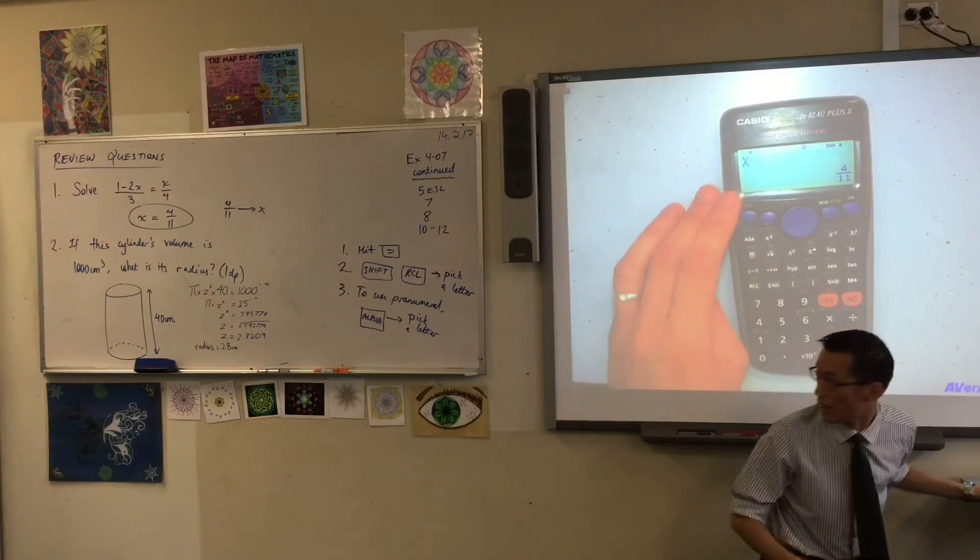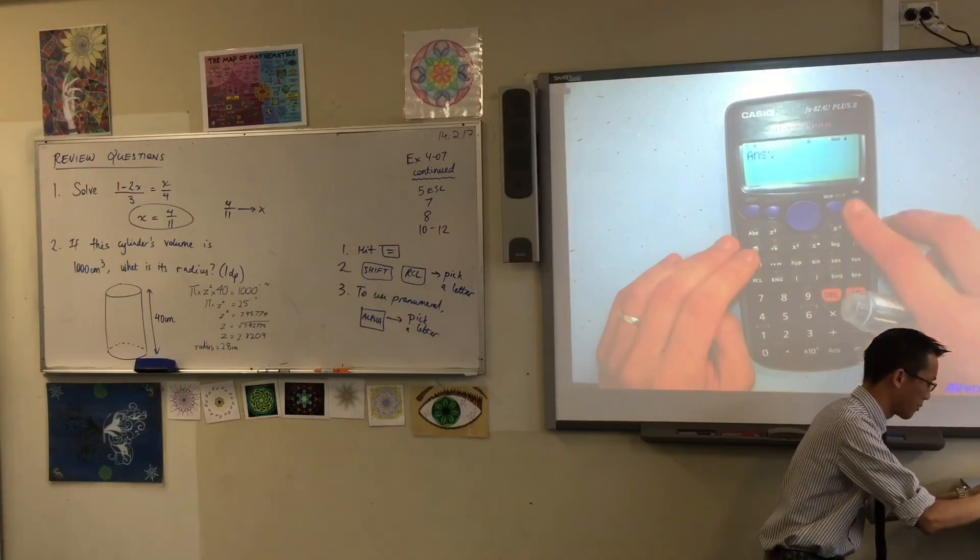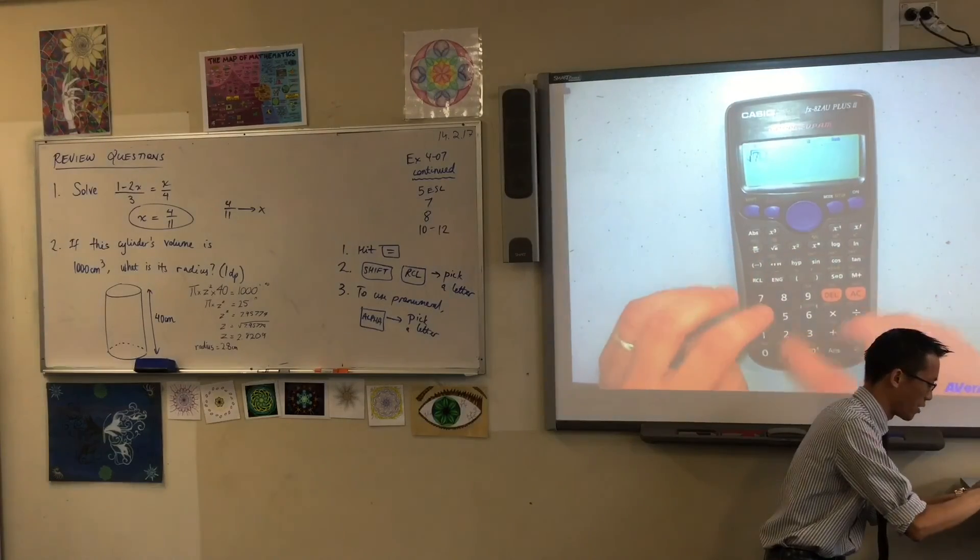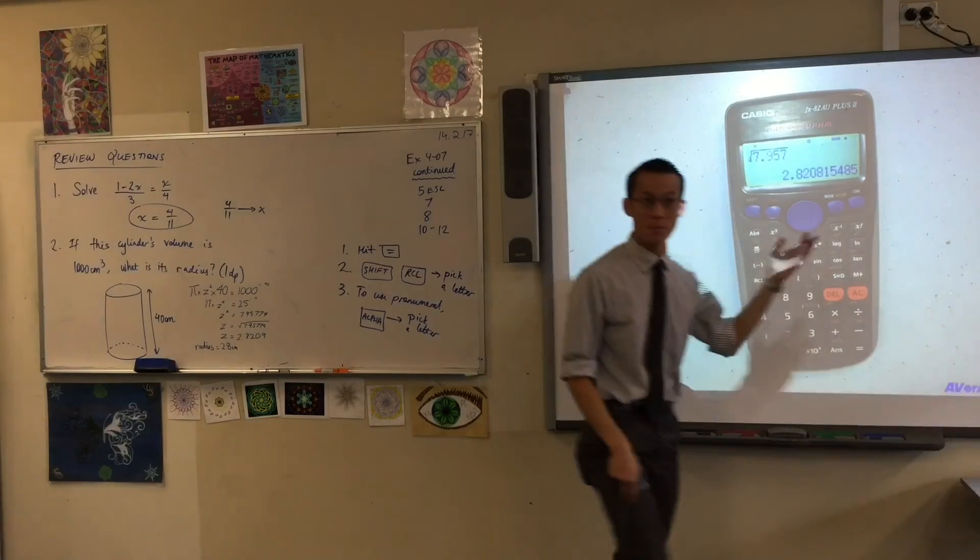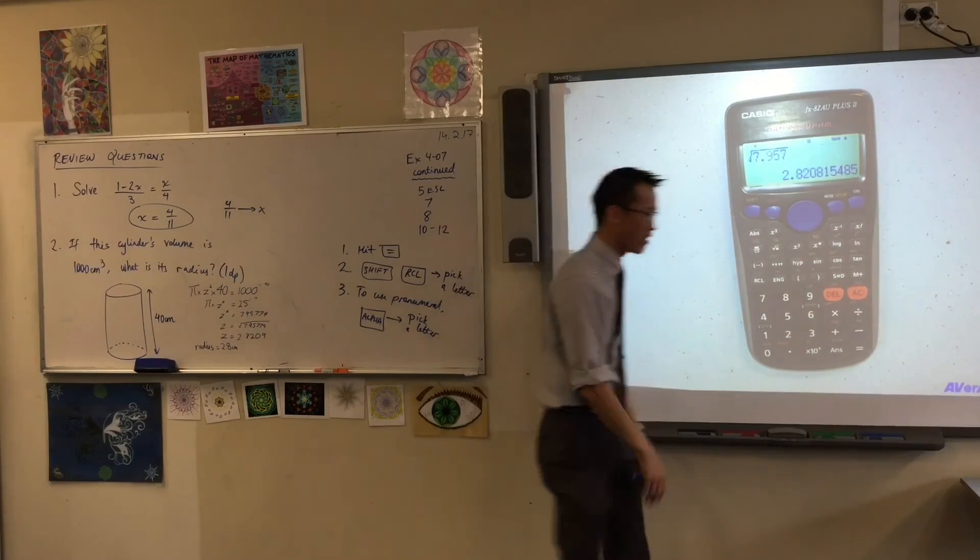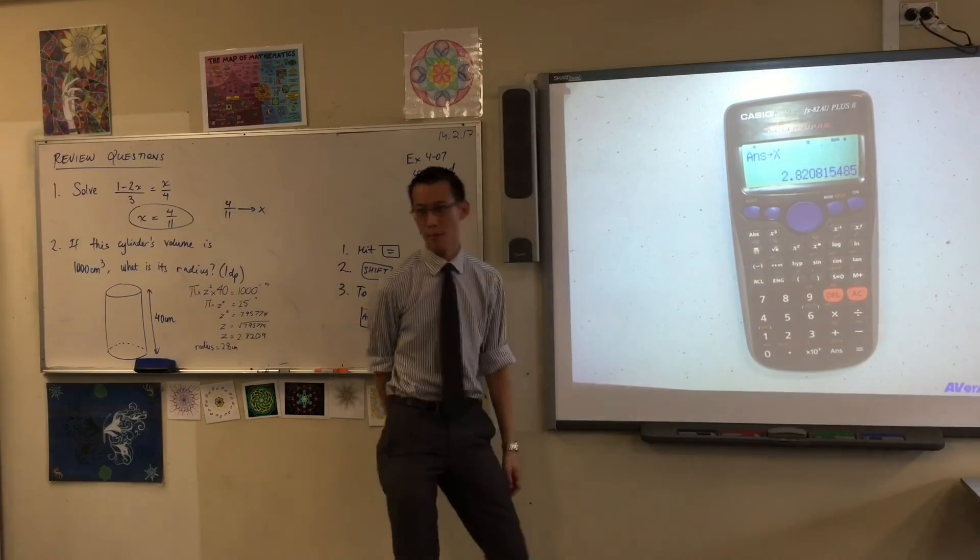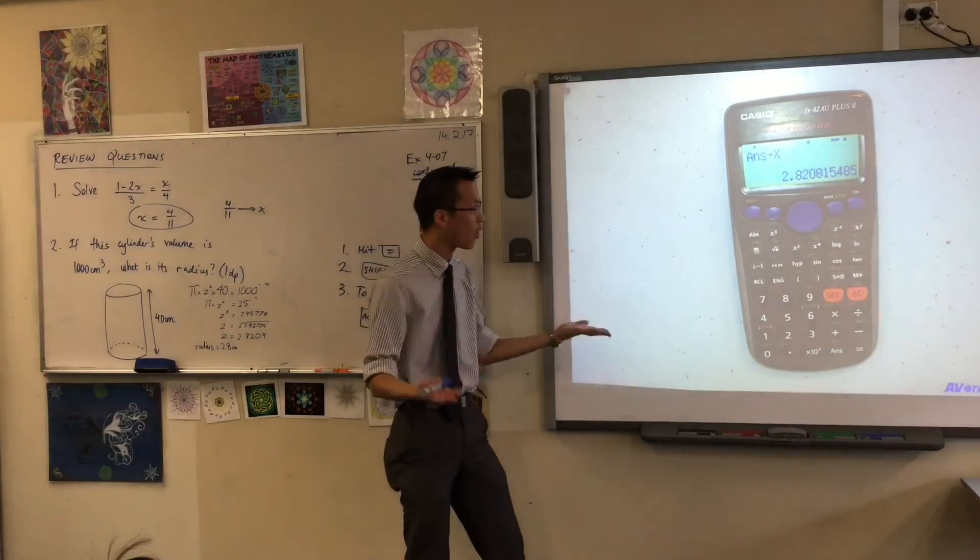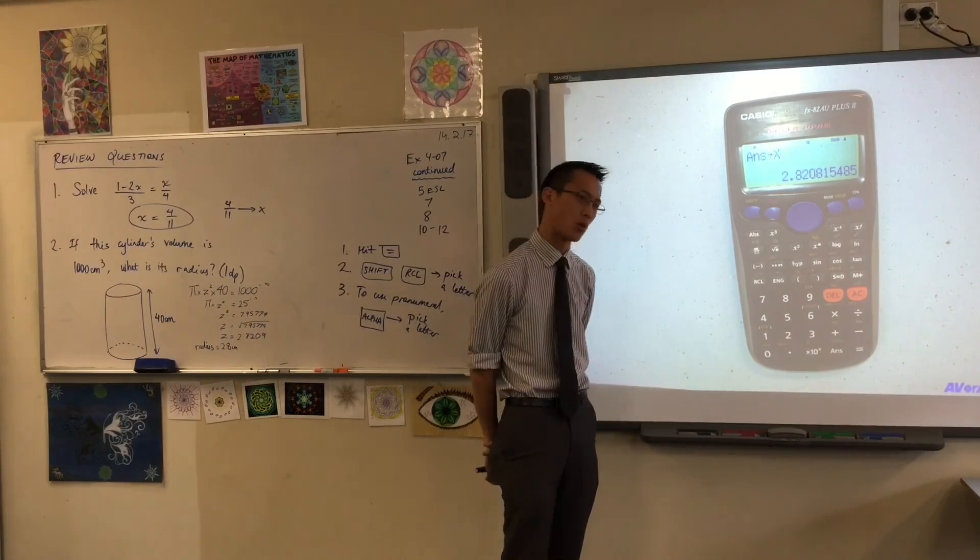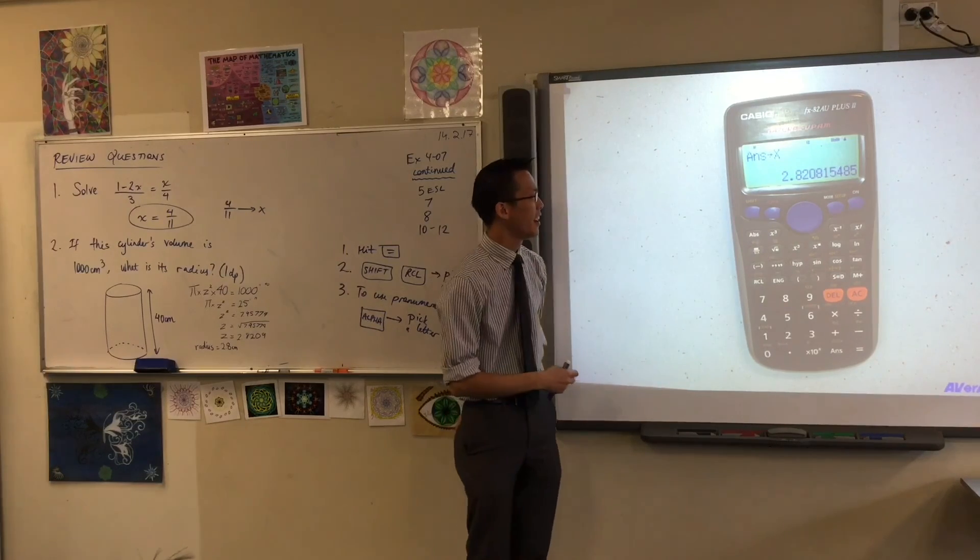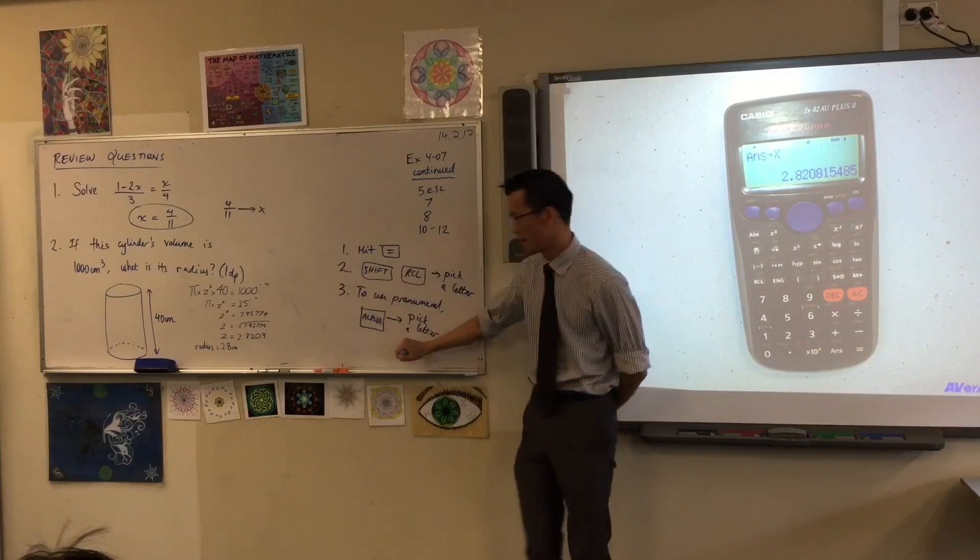If I get something else, like say, the square root of 7.955, sorry, 5, 7, whatever it is. Suppose that number is important to me, maybe I want that to be X now. If I go, shift, recall, X, it just wipes out whatever was there before. So, my 4 over 11th is gone. Now, that's what X is and it won't remember what it was before. Okay? So, this is super, super handy. You'll keep on using that all the way through year 11 and 12, so it's worth having the idea now.